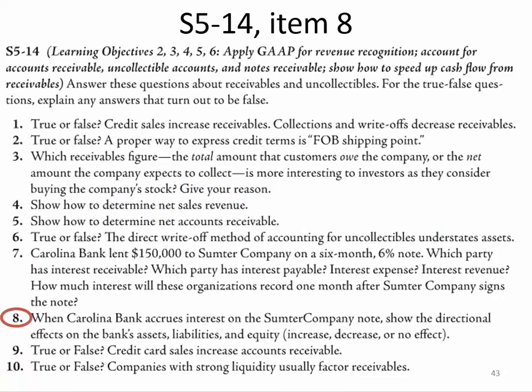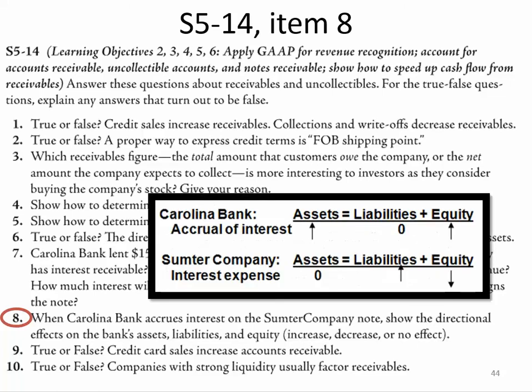Question eight: when Carolina Bank accrues interest on the Sumpner Company note, show the directional effects on assets, liabilities, and equity. For Carolina Bank: assets go up because of interest receivable, and equity goes up because of interest revenue. For Sumpner Company: liabilities increase due to interest payable, and equity decreases due to interest expense.